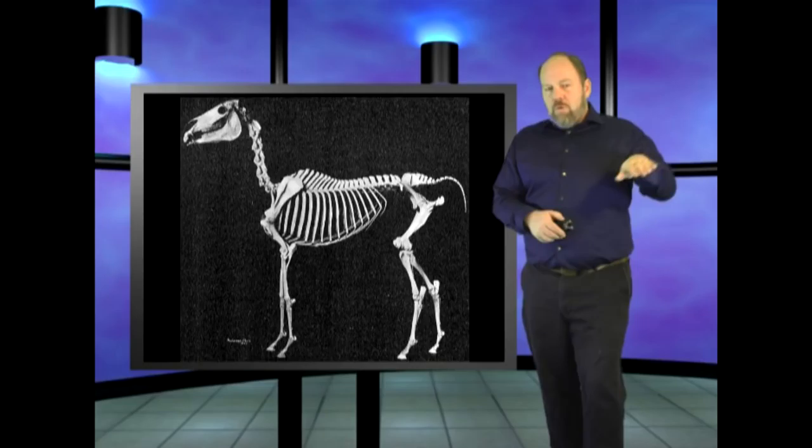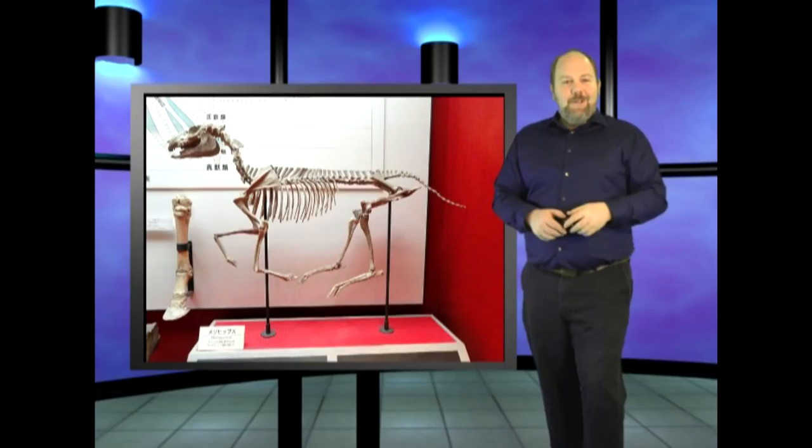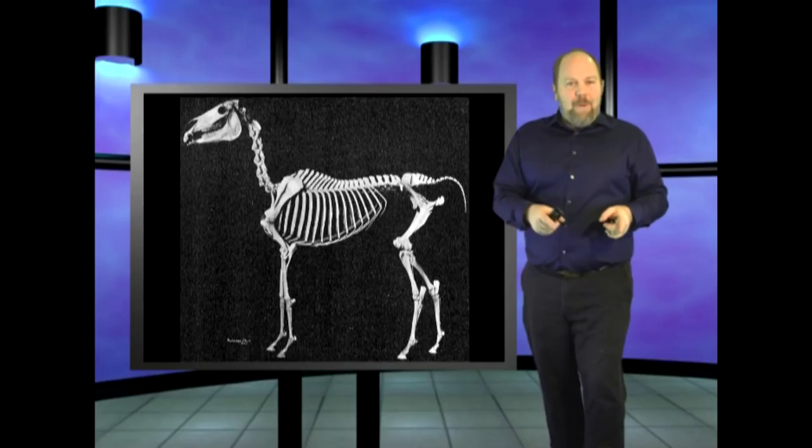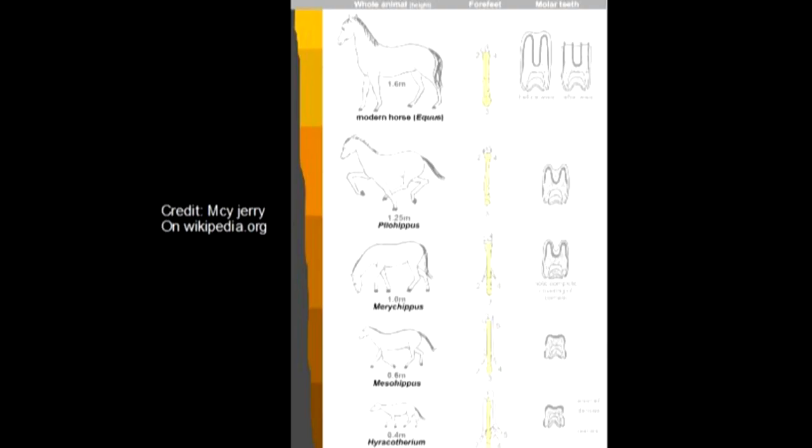Horses have a spine that droops down, while these animals have a spine that arched up. Yet the skeletons are depicted with the backs flattened or even reverse arched in order to better match the horse spine, and give the illusion that these animals are somehow related to the horses.